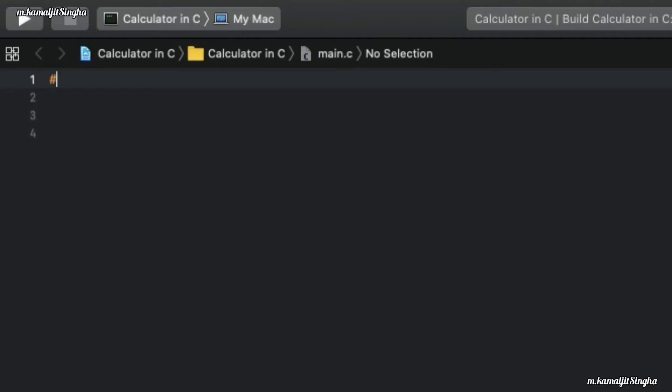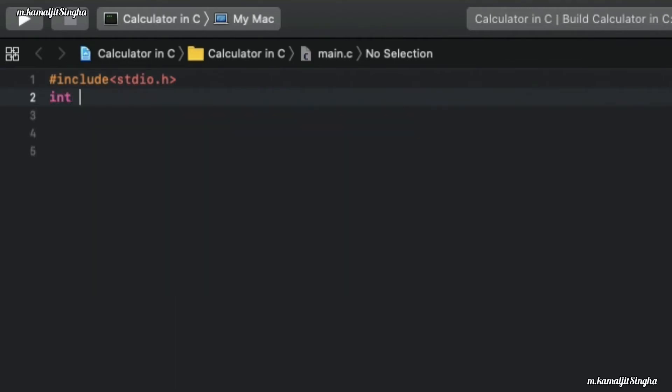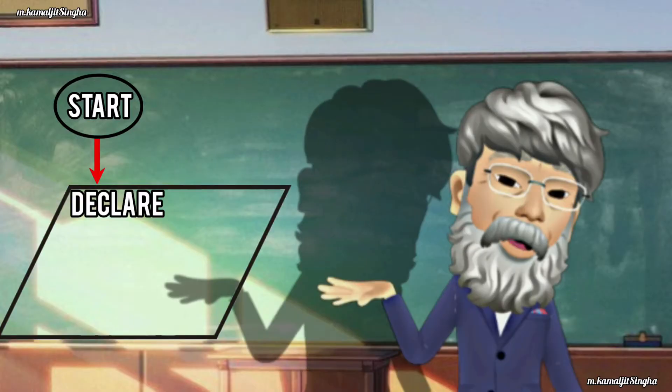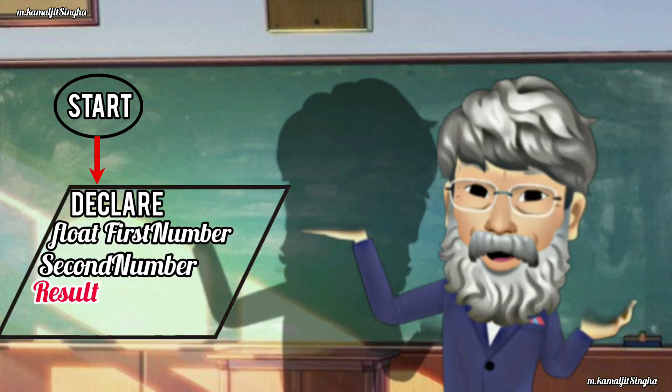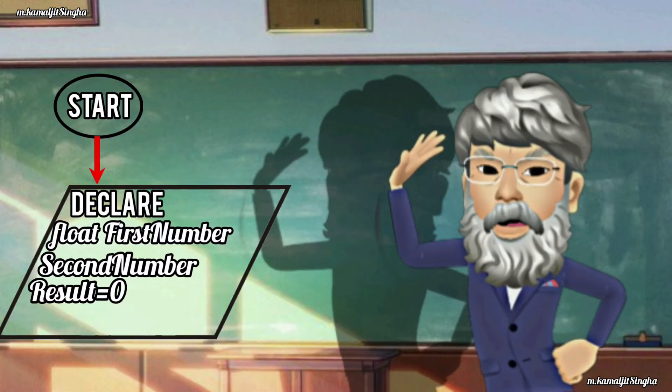Step 2: declare four variables - float FirstNumber, SecondNumber, Result initialized to zero, and character Operator.